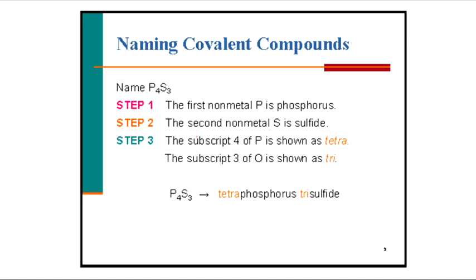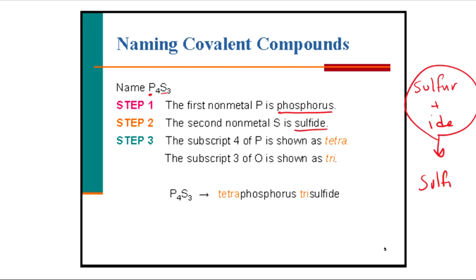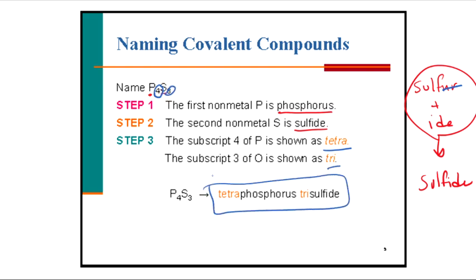Next example: P4S3. Phosphorus and sulfur are both non-metals, so we use the three-step strategy. The first non-metal is phosphorus (keep the name). The second is sulfur — add -IDE — we call that sulfide. Now the numbers: four phosphorus atoms means the prefix tetra, and three sulfur atoms means tri. So the name of this compound is tetraphosphorus trisulfide.